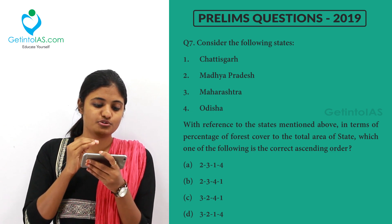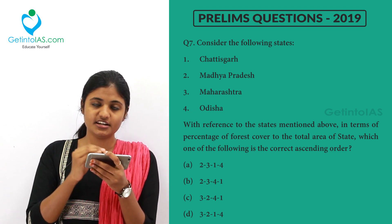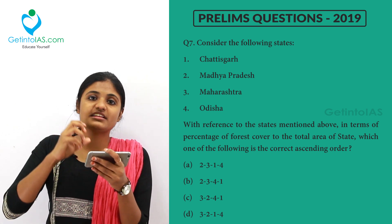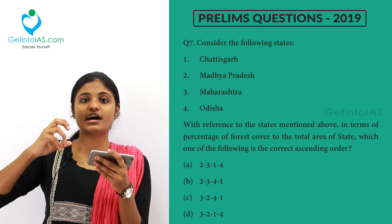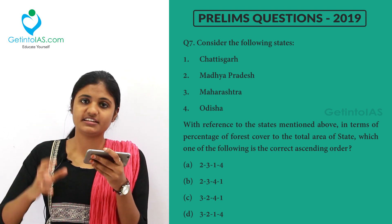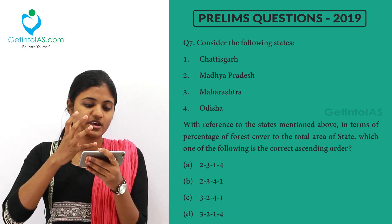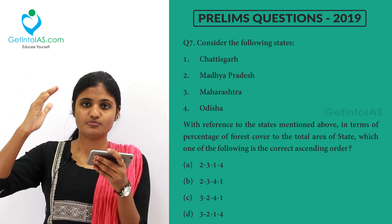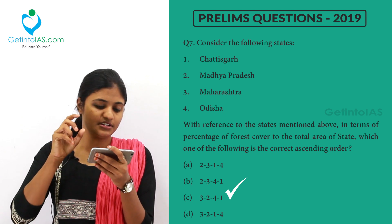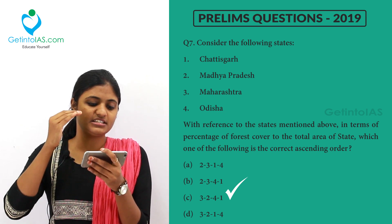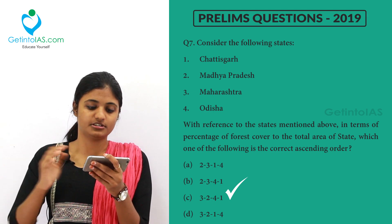Logically, Chhattisgarh is still largely a tribal area. Most parts of Chhattisgarh are tribal areas, and tribal areas are protected areas — hence the forest cover there is more. That is why Chhattisgarh is high in terms of forest cover. Option C is the correct answer: Maharashtra, Madhya Pradesh, Odisha, and lastly Chhattisgarh.